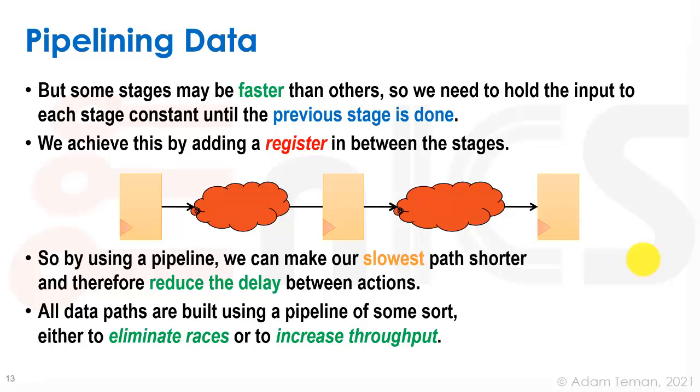So again, the two reasons for using sequential or synchronous logic is really to first of all eliminate races, which is essential or else we'll get an erroneous output, but also to increase throughput by reducing the size of our longest path, and thereby providing an output at a higher frequency.